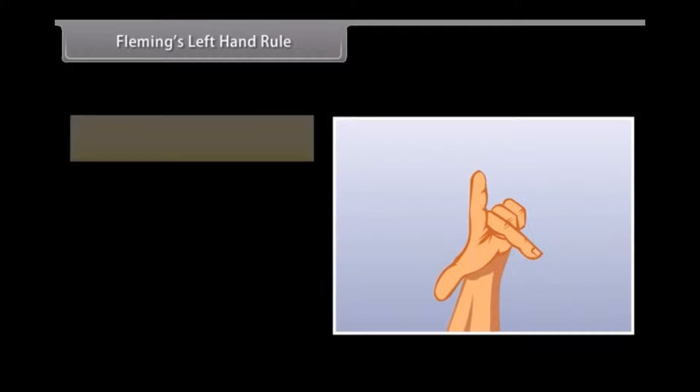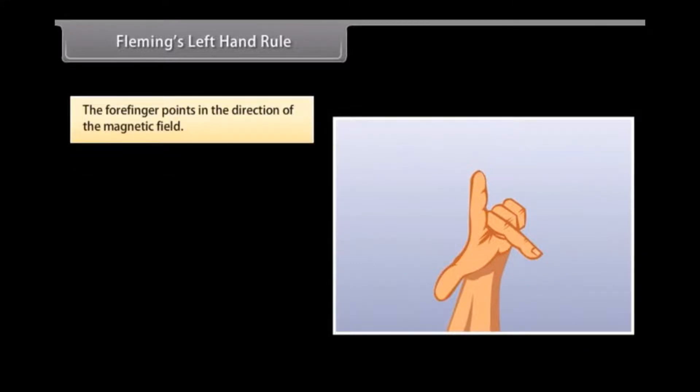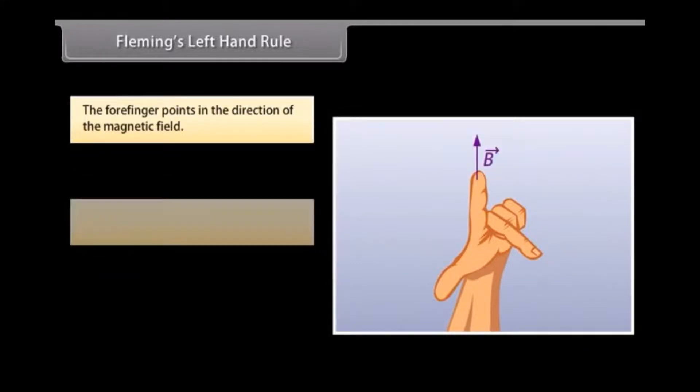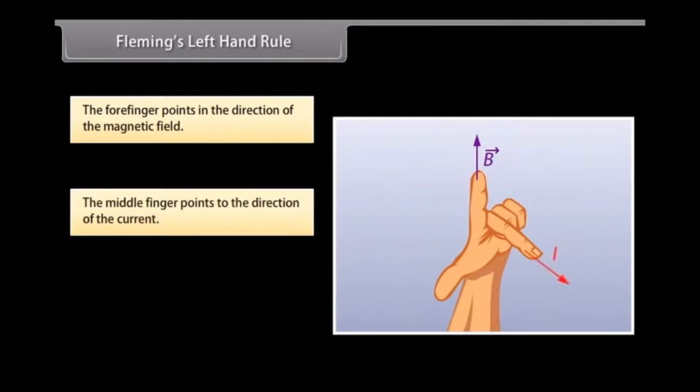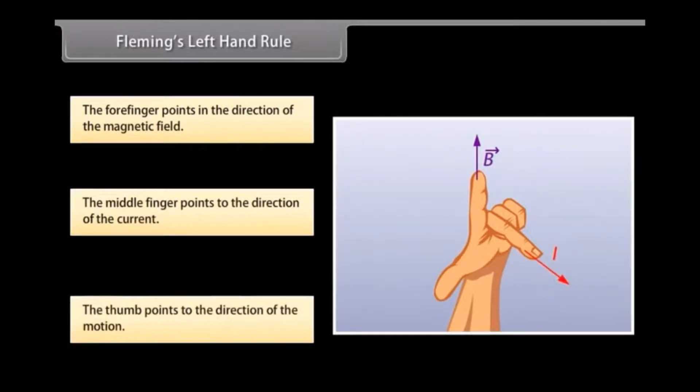Fleming's Left Hand Rule. Fleming's Left Hand Rule is mnemonic to represent three directions. You need to stretch your thumb, forefinger and middle finger of your left hand. Each finger points to a specific direction. The forefinger points in the direction of the magnetic field. The middle finger points to the direction of the current. The thumb points to the direction of the motion. This is Fleming's Left Hand Rule. Examples include woofers, subwoofers, electrical actuators, etc.